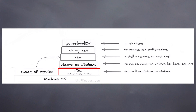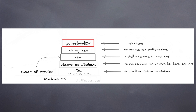On Windows OS you need to enable WSL — WSL stands for Windows Subsystem for Linux. On WSL we will install Ubuntu for Windows, and then on Ubuntu we will install ZSH shell. To manage ZSH configuration we will install Oh My ZSH, and then on top of Oh My ZSH we will install PowerLevel10k — this is a theme. Let's get started.